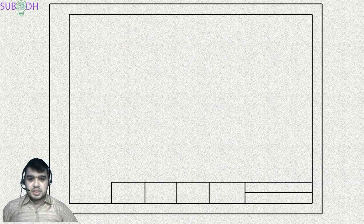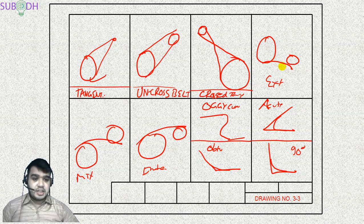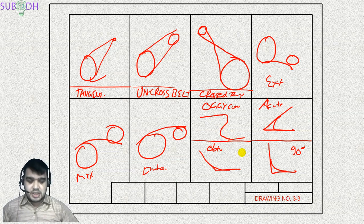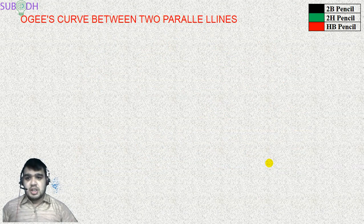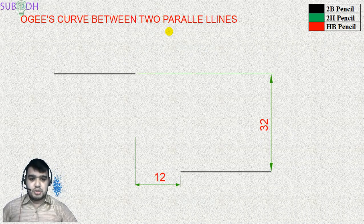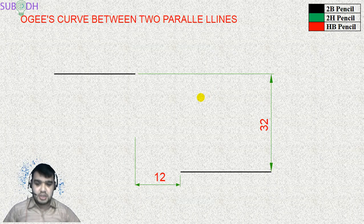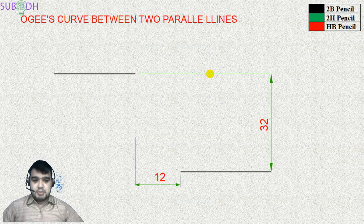We have previously covered tangents from a point, tangent between two circles, line tangent, and arc tangent between two circles. This is basically a tangent between two lines — a continuous tangent between two lines, and an arc tangent between two lines. So now I am completing the arc tangent between two parallel lines. The question involves parallel lines as usual.